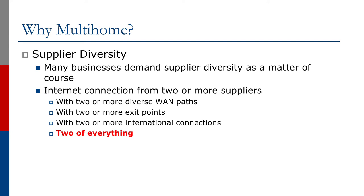There's also supplier diversity. Many businesses demand supplier diversity as a matter of course. This can mean internet connections from two or more suppliers, with two or more diverse paths, two or more exit points, and for international connections, two or more international connections — in fact, two of everything. You see a common theme through this whole presentation series: we're talking a lot about two of everything. For multi-homing, two of everything is very, very important, because if one fails — temporarily or longer term — you have a backup, meaning your network infrastructure and end users can carry on using the network even with a disruption in place.